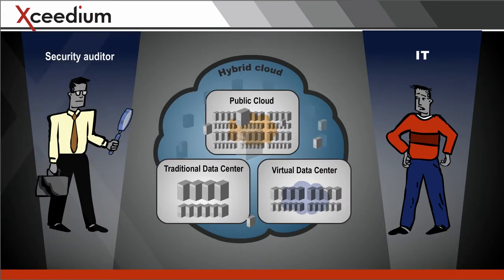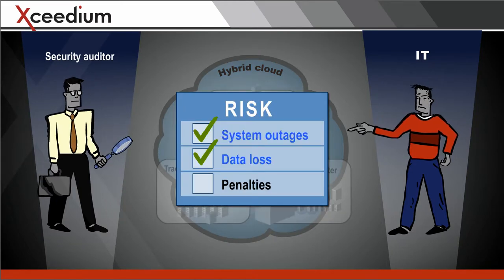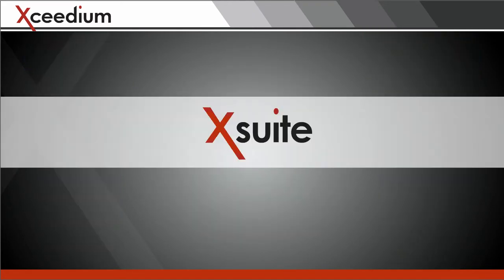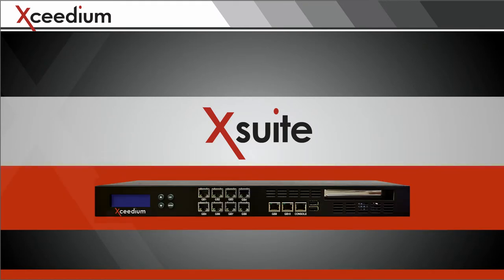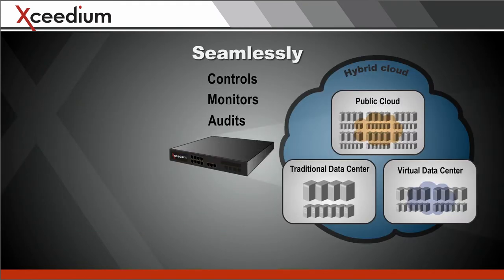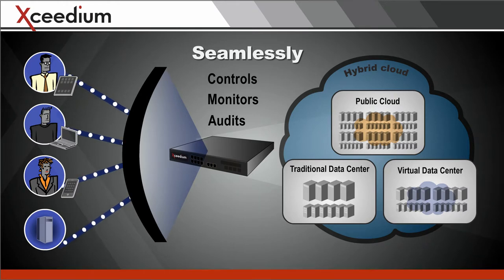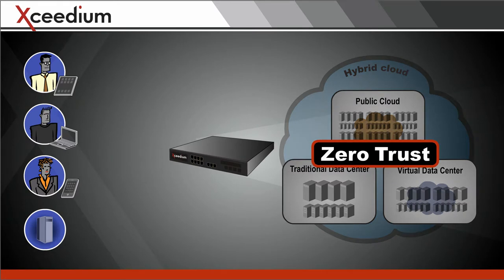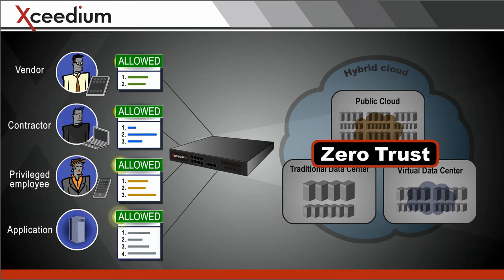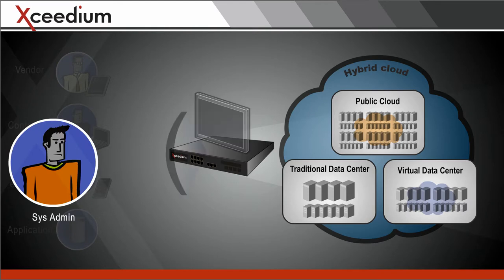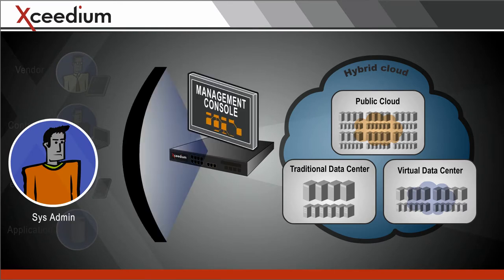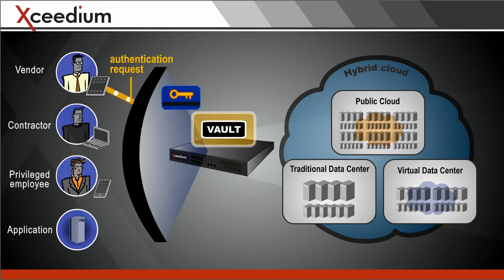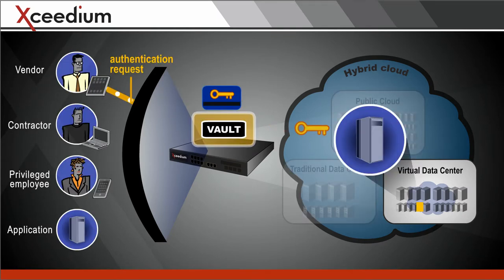You don't have to be a security auditor to see the mounting risks here. Excedium XSuite seamlessly controls, monitors, and audits everything privileged users do. It is built on a zero-trust model that denies access to all systems except those expressly allowed. XSuite protects management consoles and enforces role-based access. It vaults and manages privileged credentials and enforces strong authentication before unlocking them.